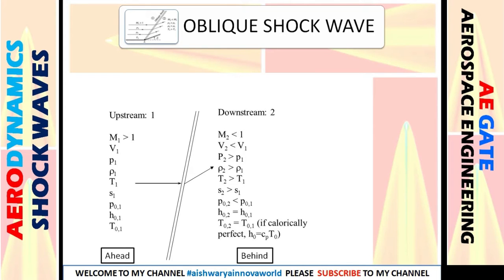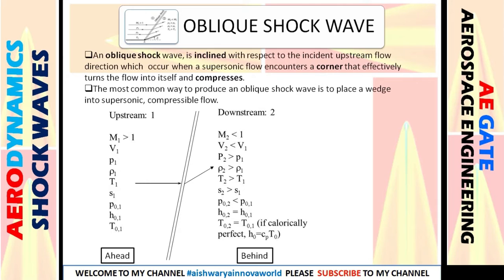An oblique shockwave is a shockwave inclined with respect to the upstream flow — it is not perpendicular like a normal shockwave. While a normal shockwave is at 90 degrees, an oblique shockwave is inclined at some angle. This oblique shockwave forms at a corner where the flow is turned into itself.